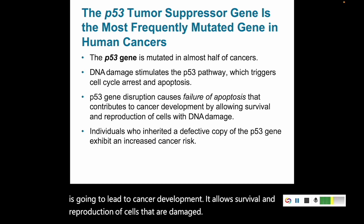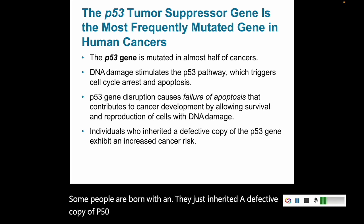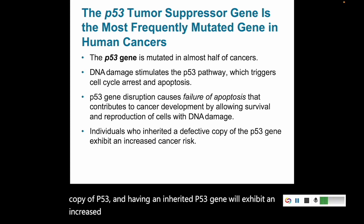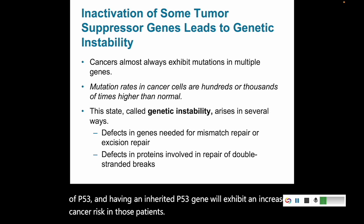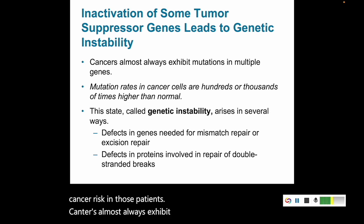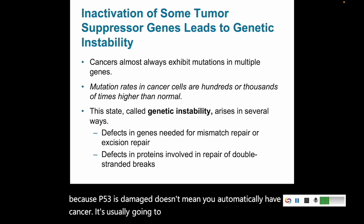Some people are born having inherited a defective copy of P53, and having an inherited defective P53 gene will exhibit an increased cancer risk in those patients. Cancers almost always exhibit mutations in multiple genes. So just because P53 is damaged doesn't mean you automatically have cancer — it's usually going to take multiple gene damage.